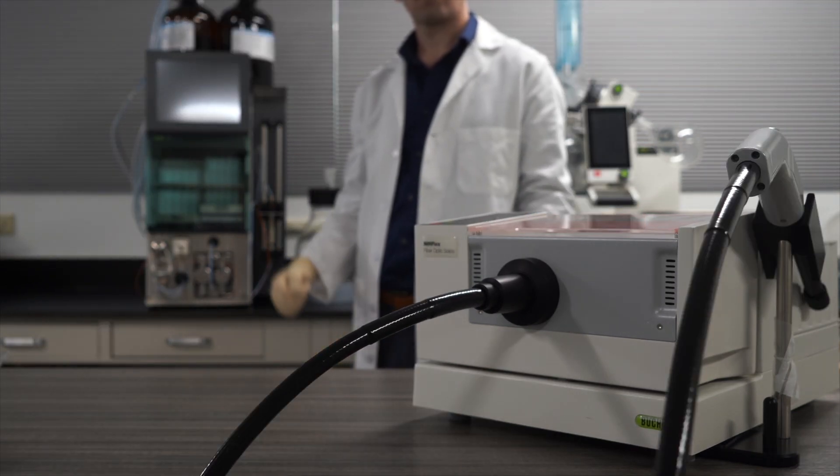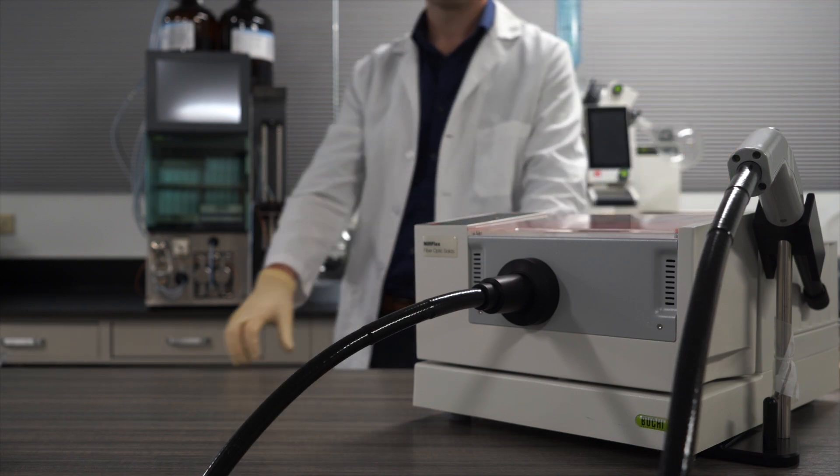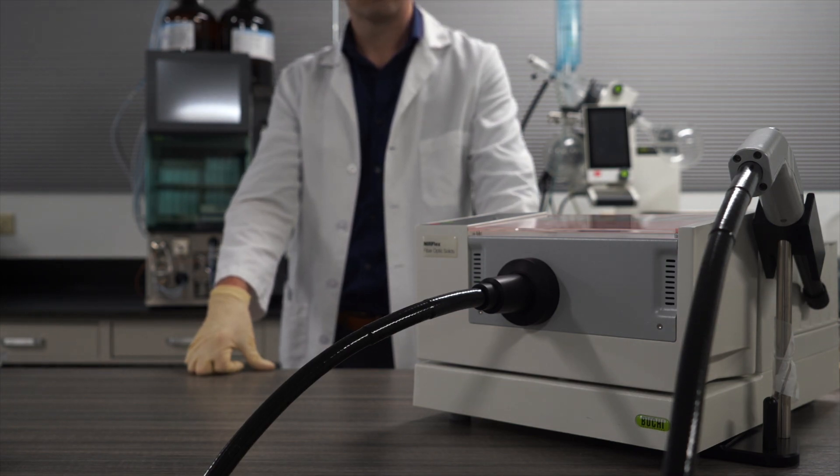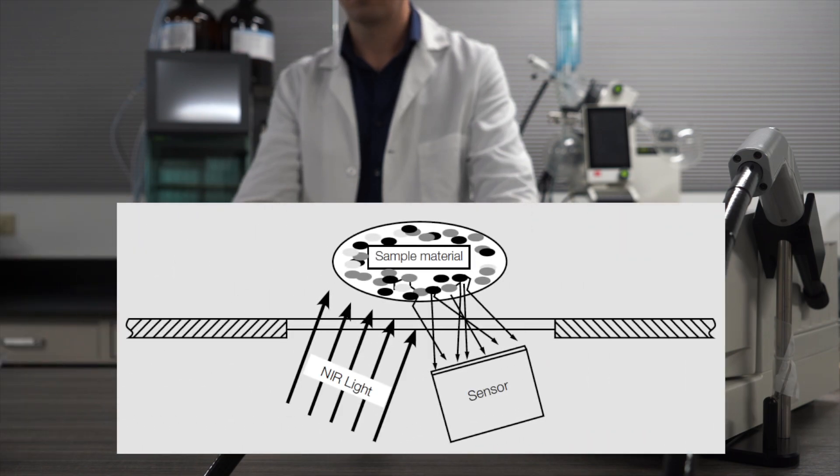The length of the fiber optic cabling can be two, three, or five meters, meaning the sampling point can be up to five meters away from the instrument itself. The fiber optic solids probe operates by diffuse reflection, the same principle as the solids module.